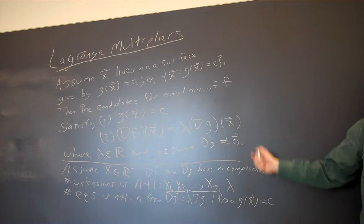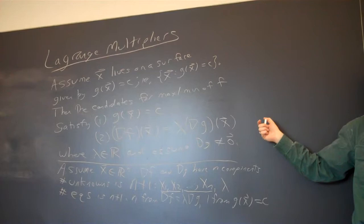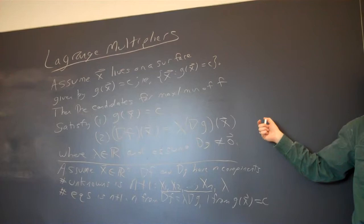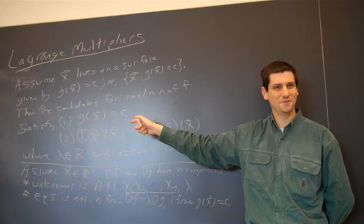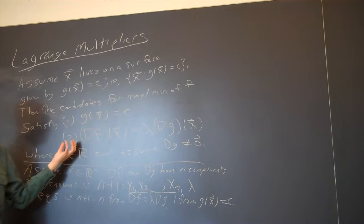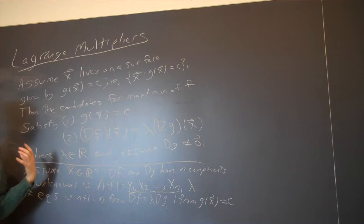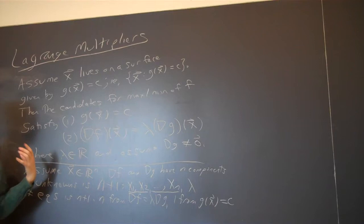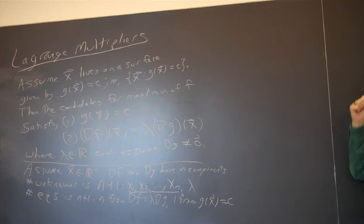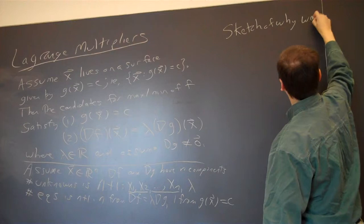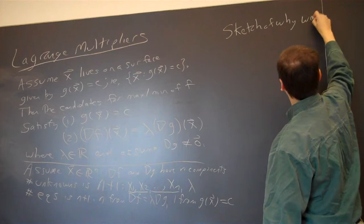What I want to do now is sketch why this method works — I'll go through the full details in the online video. Imagine you have some surface g of x equals c. Take a point x on that surface. You have lots of different ways of staying on the surface. Let c of t be a curve in the surface, with c of 0 equal to x. Then c prime of 0 equals v, which is tangent to the surface.